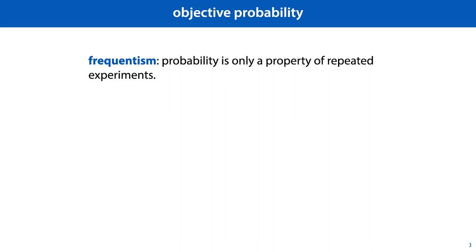The most common form of objective probability is frequentism. Under the frequentist definition, probability is a property of a hypothetical repeated experiment. For instance, take the statement: the probability of rolling a 6 with a fair die is 1 in 6. The experiment is rolling a die. The outcome we are discussing is the roll resulting in a 6. If we were to repeat the experiment a large number of times, n, then the proportion of times we observe the discussed outcome is close to 1 in 6. More precisely, as n grows, the proportion converges to 1 in 6. Under a frequentist interpretation, saying the probability is 1 in 6 is equivalent to saying, if I roll the die repeatedly, the relative frequency of 6s will converge to 1 in 6 as the number of rolls grows.